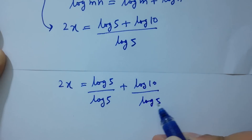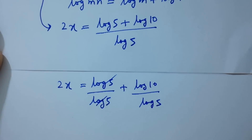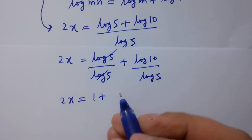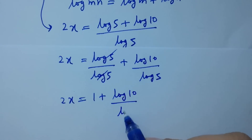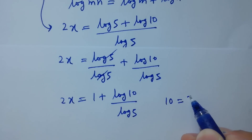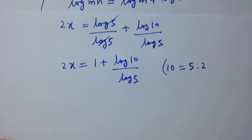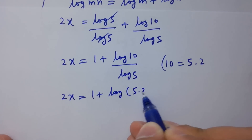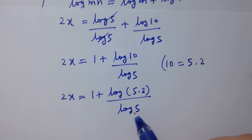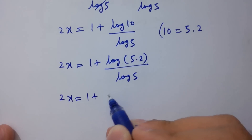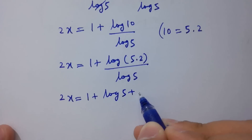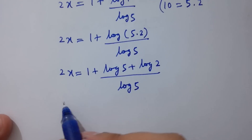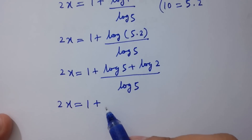Splitting the fraction: 2x equals log 5 over log 5 plus log 10 over log 5. Log 5 over log 5 cancels to 1, so 2x equals 1 plus log 10 over log 5. As 10 equals 5 times 2, 2x equals 1 plus log of 5 times 2 over log 5, which expands to 1 plus log 5 over log 5 plus log 2 over log 5.